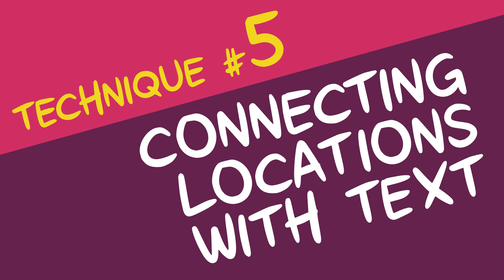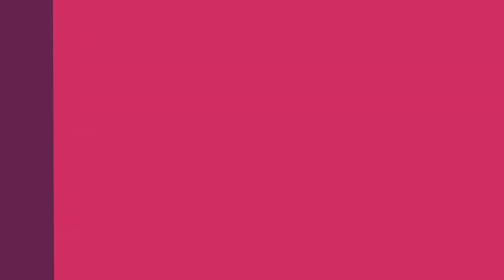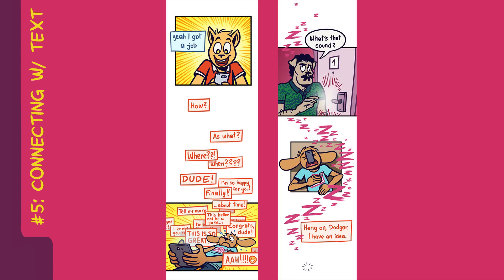Technique number five: connecting locations with text. When showing the same event happening in different locations, or being viewed from different vantage points, it can be useful to use text or colors to convey the connection between these two scenes. Here are two examples where I'm using text to connect characters to each other. In both cases, the text leaves or extends past the panels showing the characters. This helps convey to readers that this text — this dialogue or sound effect — quite literally extends past the confines of the depicted locations.